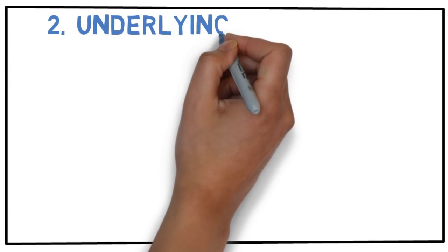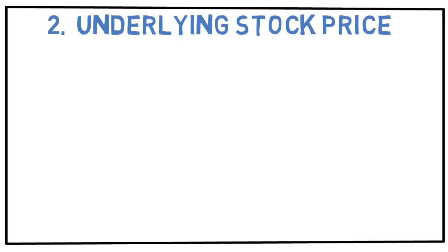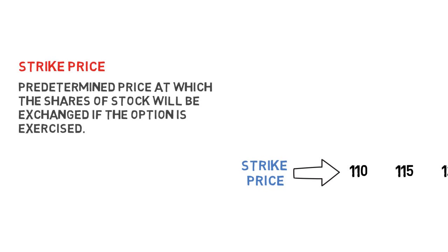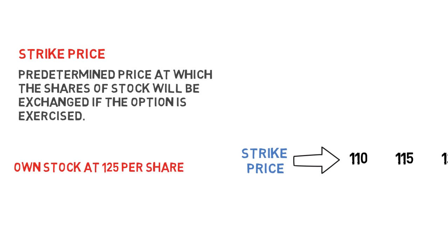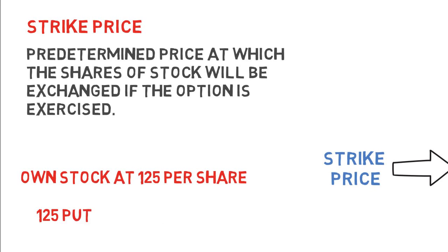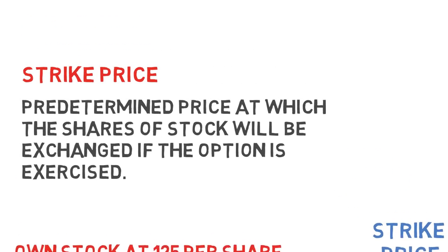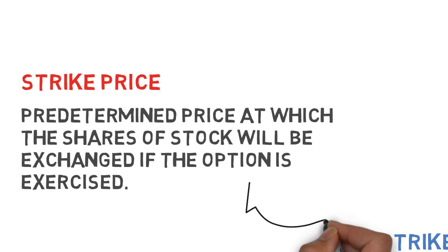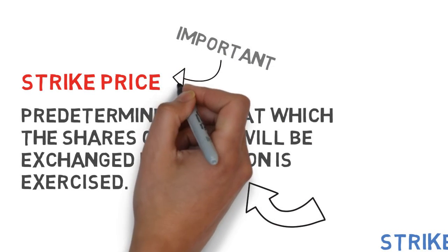The second factor that goes into option pricing is the price of the underlying stock itself. For each stock, there are multiple options at different price increments — these are called the option's strike price. The strike price is the predetermined price at which shares of stock will be exchanged if the option is exercised. For example, if you own a stock at $125 per share, you could buy the $125 put because that's where you could sell your shares if the stock goes lower. You don't have to own shares to trade options, but the strike price has a huge effect on what the option's price will be.